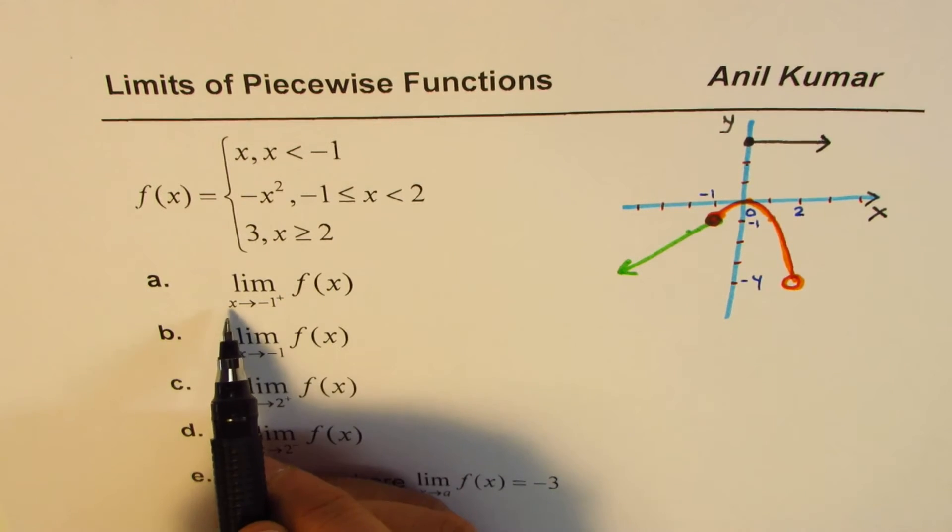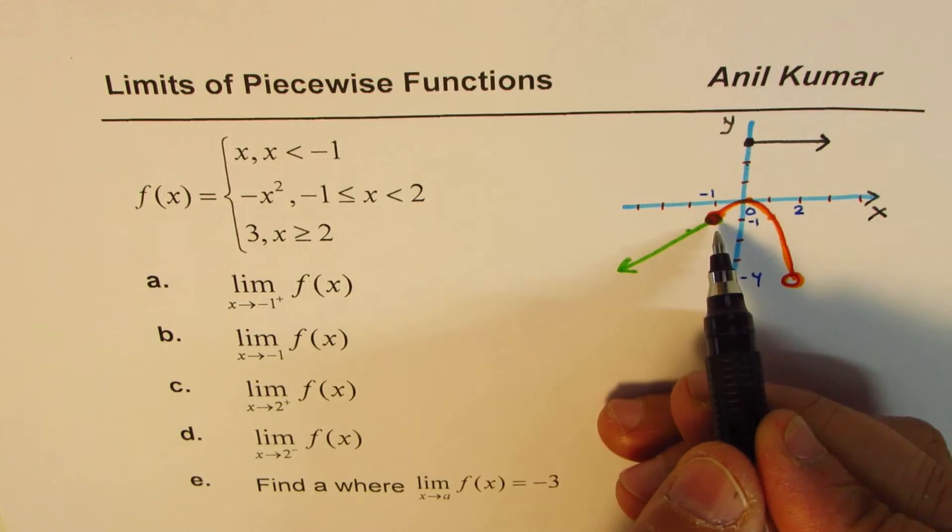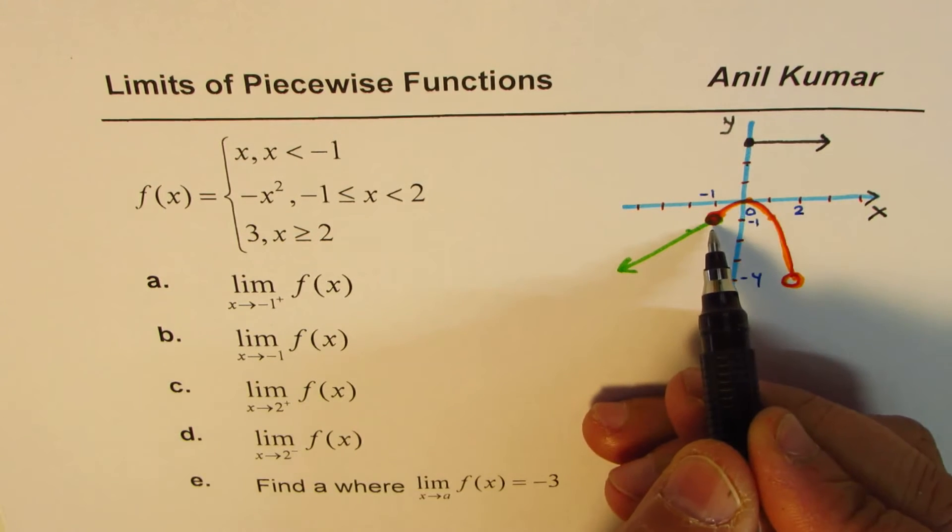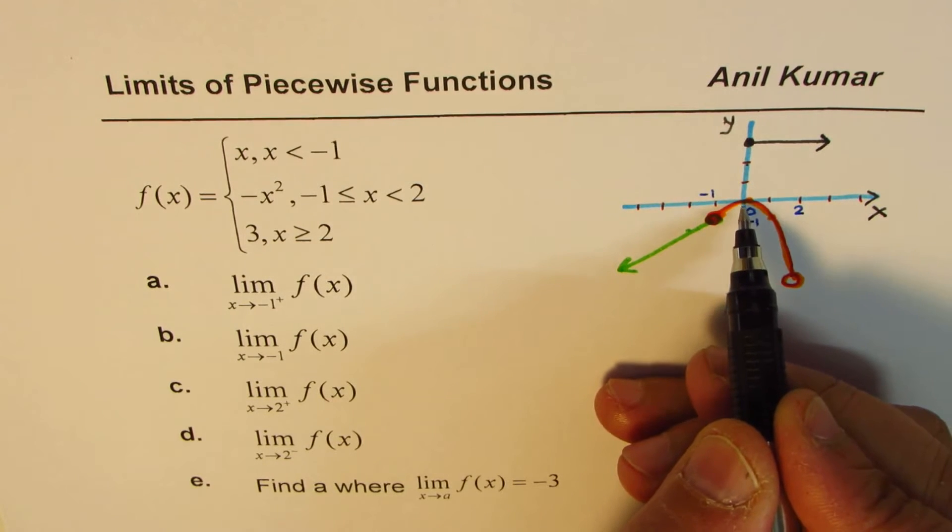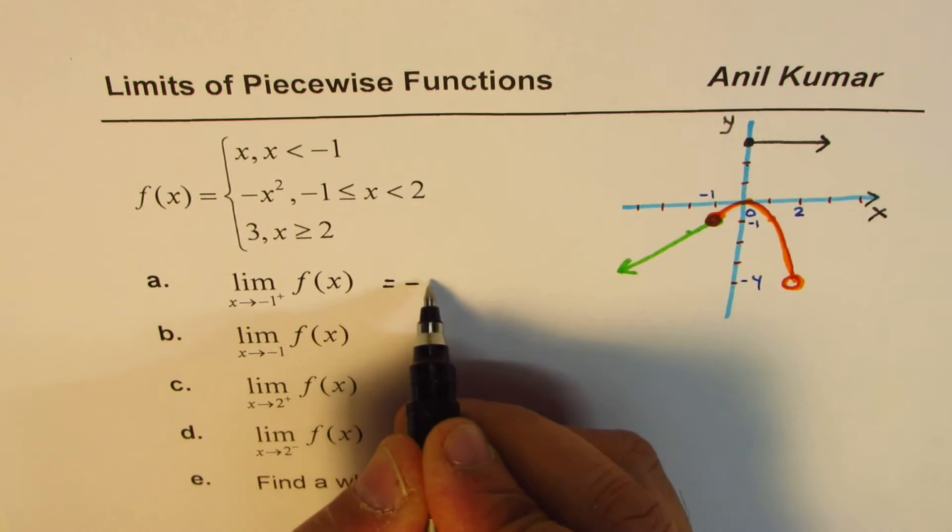Limit of this function when x approaches -1 from positive side. Now, -1 function is continuous. So from both the sides, they actually approach the same value. Do you see that? From positive side, like you are moving from here, you approach -1. So this answer is -1.